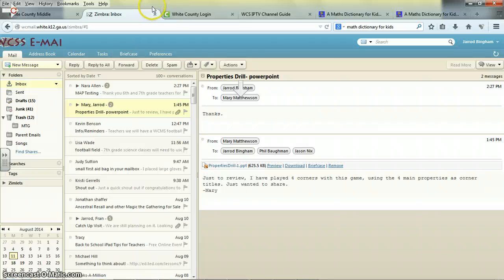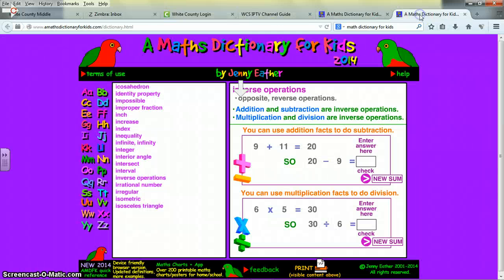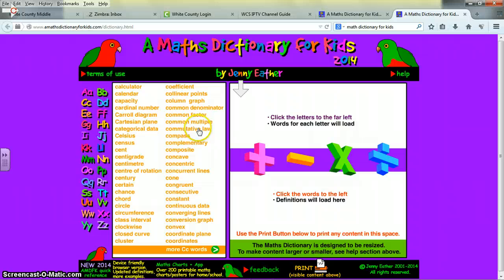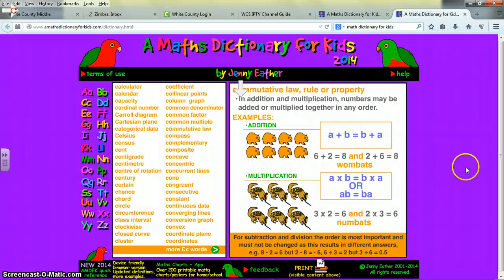I'm going to go over to a math dictionary if I can find it here. And we're going to just find that. And this is something you could Google. I Google math dictionary for kids, and it puts it in pretty easy to understand language if you're ever trying to figure something out. Let's see. Commutative law is the same thing as commutative property. So here's the definition. This is what you should have in your notes. In addition and multiplication, numbers may be added or multiplied together in any order. So here's the addition example. A plus B equals B plus A. 6 plus 2 equals 8. 2 plus 6 also equals 8. That's commutative. Also, you see the multiplication example here.